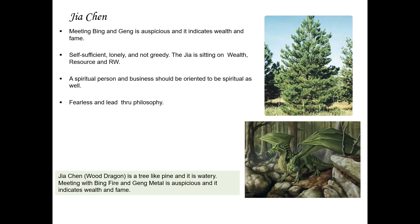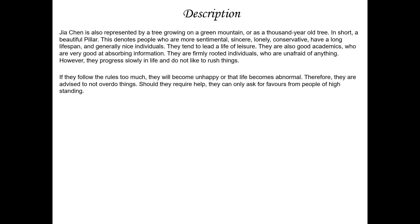Jia Chen is the wood dragon, and it is auspicious. When Jia Chen meets Bing fire or Geng fire, it indicates wealth and fame. Imagine a tree like a pine — it has nobility, sits on its wealth, sits on resources, and sits on rock wealth. Jia Chen can be quite benevolent and tends to be the life of the party. Wood dragon can be represented as a growing tree.